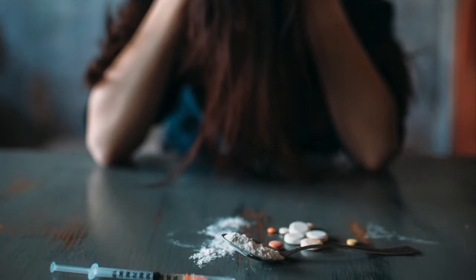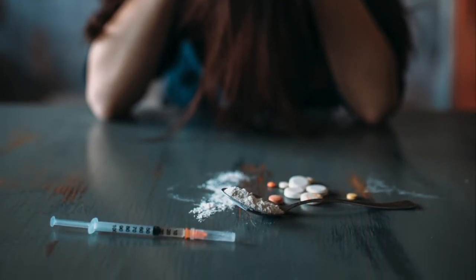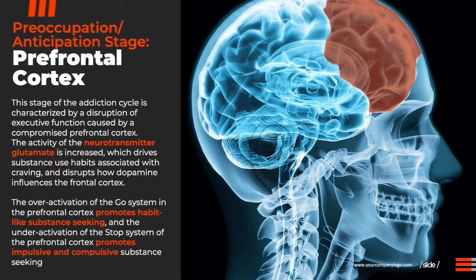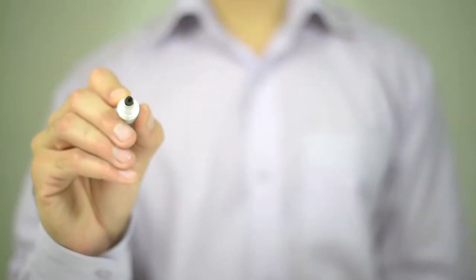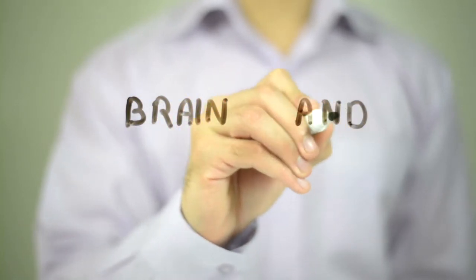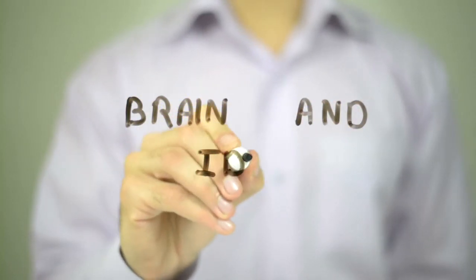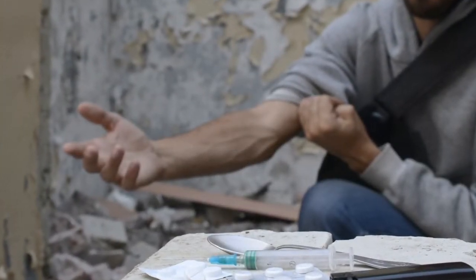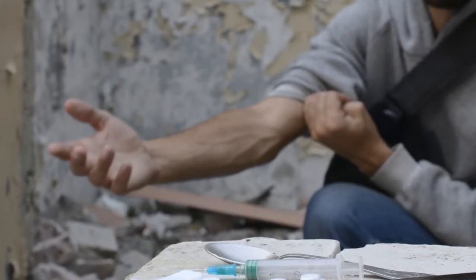People addicted to substances experience an overall reduction in the brain's reward system's sensitivity to addictive substances and natural reinforcers, such as food and sex. Simultaneously, activation of stress neurotransmitters in the extended amygdala occurs during the withdrawal stage. These neurotransmitters play a vital role in the negative feelings associated with withdrawal and in stress-triggered substance use. The desire to remove the negative feelings that accompany withdrawal can be a strong motivator of continued substance use. The preoccupation stage of addiction involves the brain's prefrontal cortex, which controls executive function such as organizing thoughts, prioritizing tasks, managing time, making decisions, and regulating one's actions, emotions, and impulses.